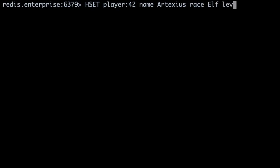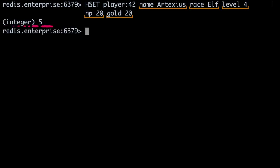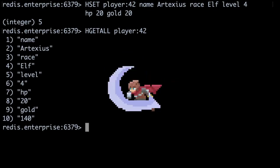After specifying the key, we add as many field value pairs as we want. When we run this command, Redis returns five, indicating the number of fields saved to the hash. We've now created a Redis hash, our first player for the mages and minotaurs.